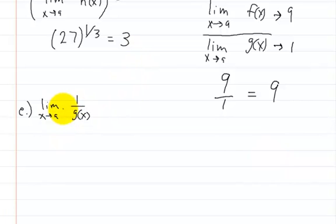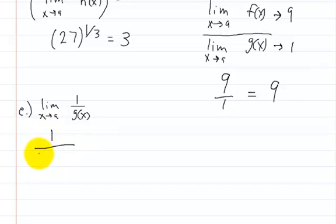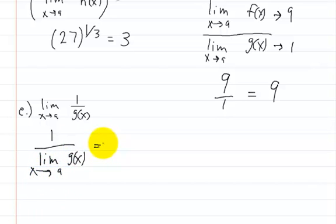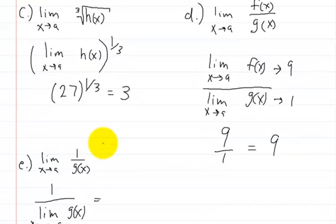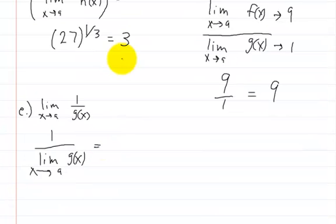Here we have part e: the limit of 1 divided by g of x as x approaches a. You can't take the limit of a constant, so we just apply the limit to g of x. It's 1 divided by the limit of g of x as x approaches a. Since g of x is 1, we get 1 divided by 1, which equals 1.